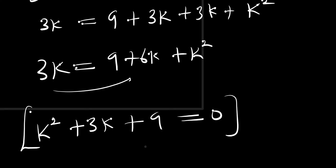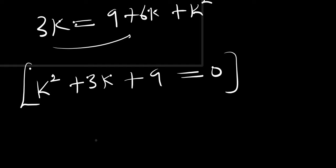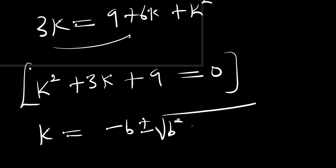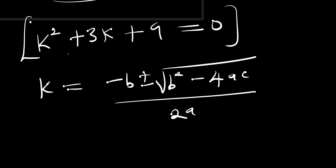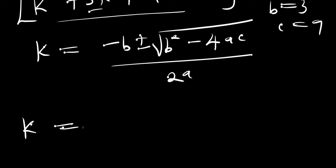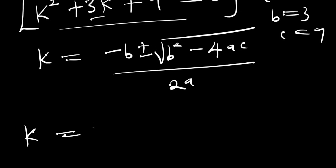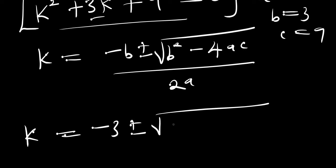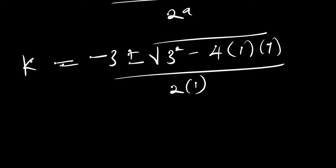We solve this using the quadratic formula: k equals negative b plus or minus the square root of b squared minus 4ac, all divided by 2a. From the equation k squared plus 3k plus 9 equals 0, we have a equals 1, b equals 3, and c equals 9. Substituting: k equals negative 3 plus or minus the square root of 3 squared minus 4 times 1 times 9, divided by 2 times 1.